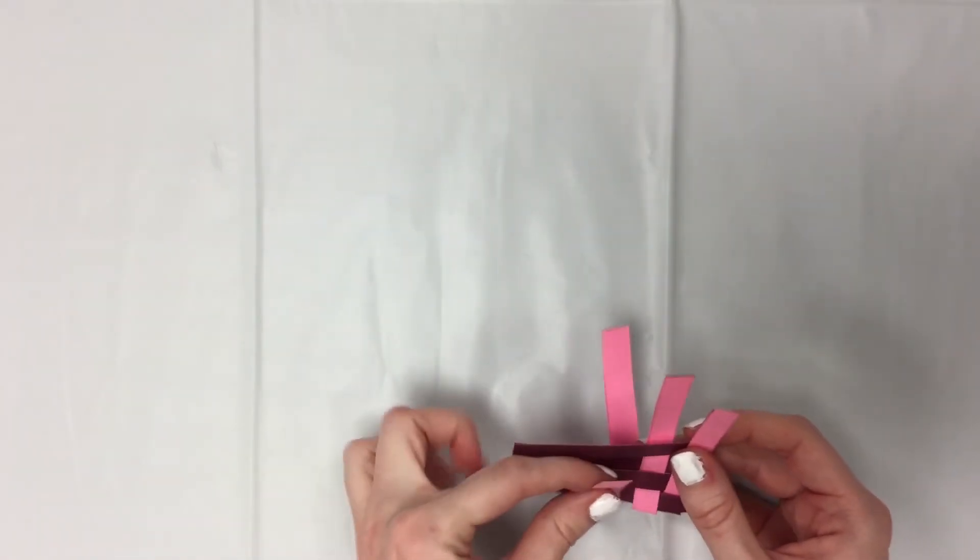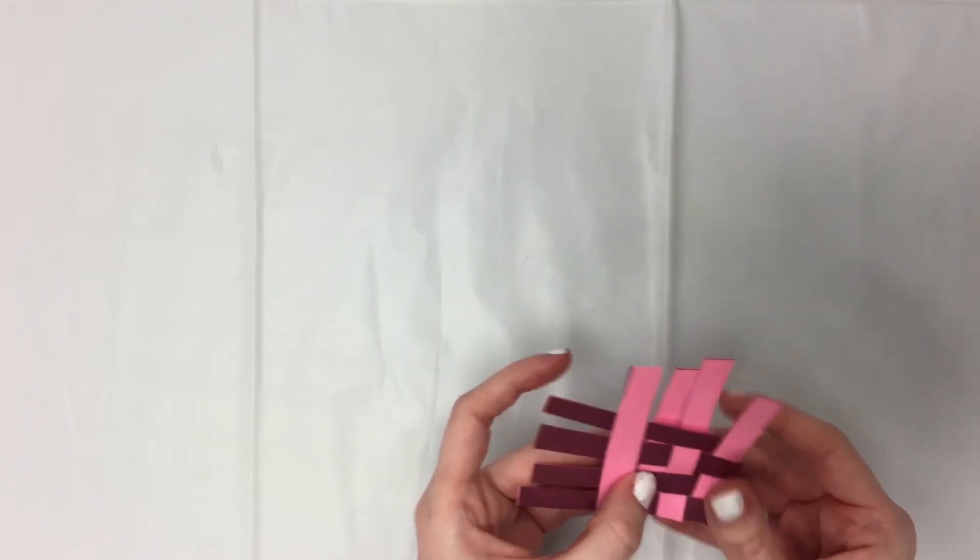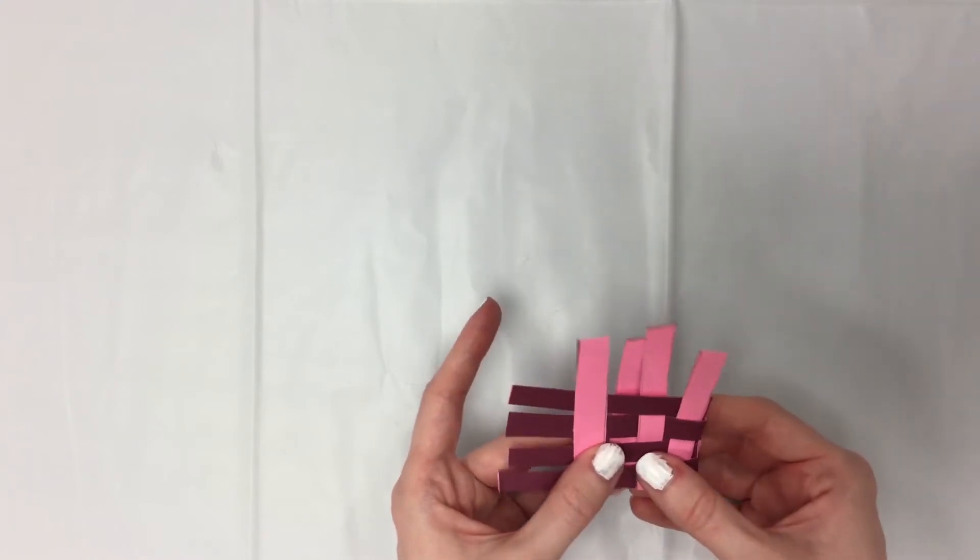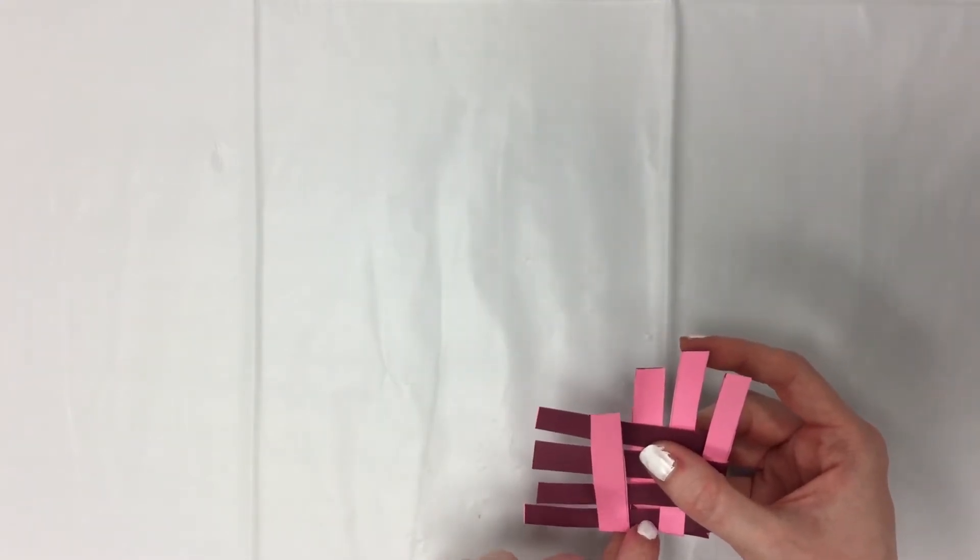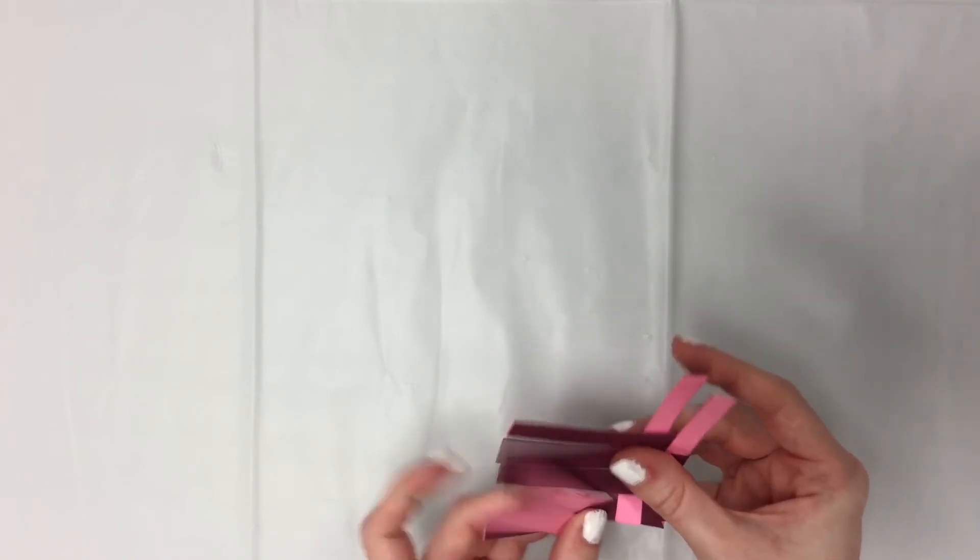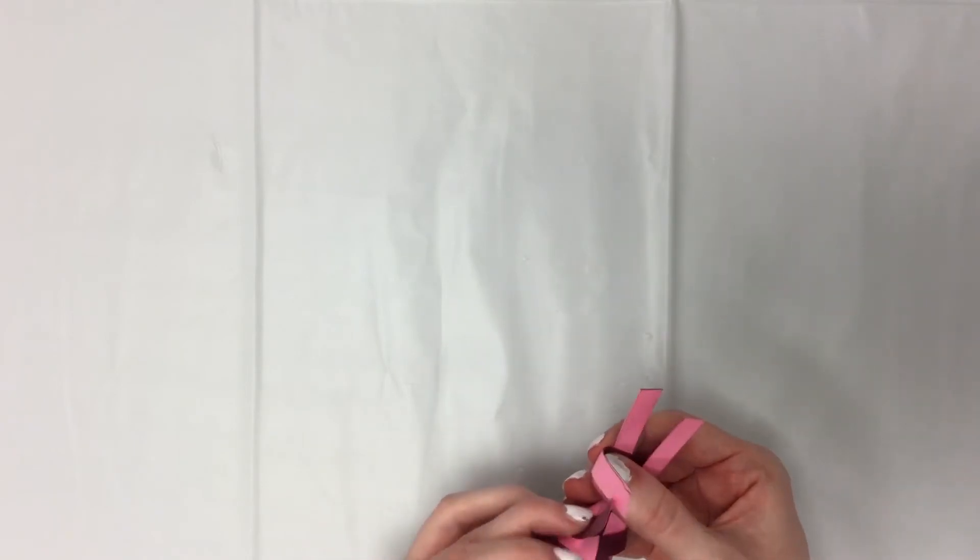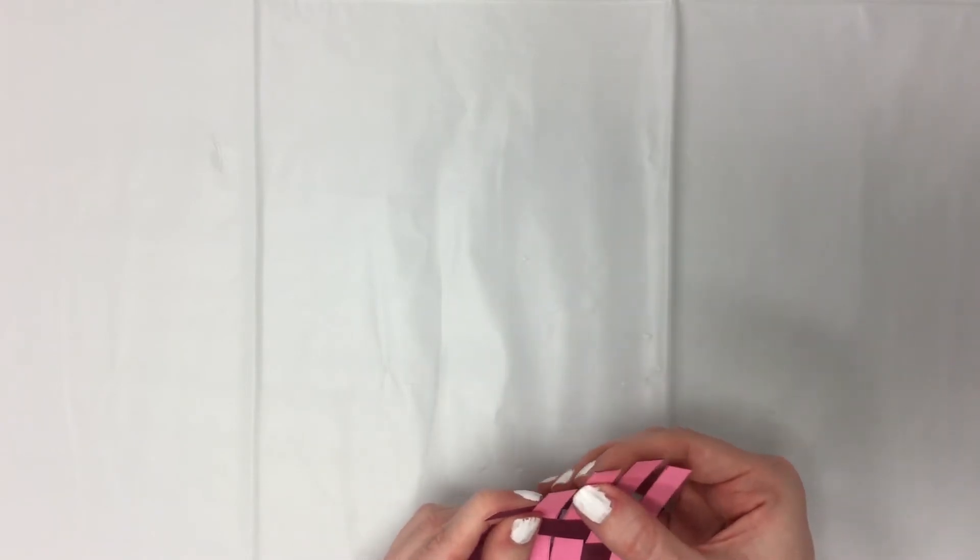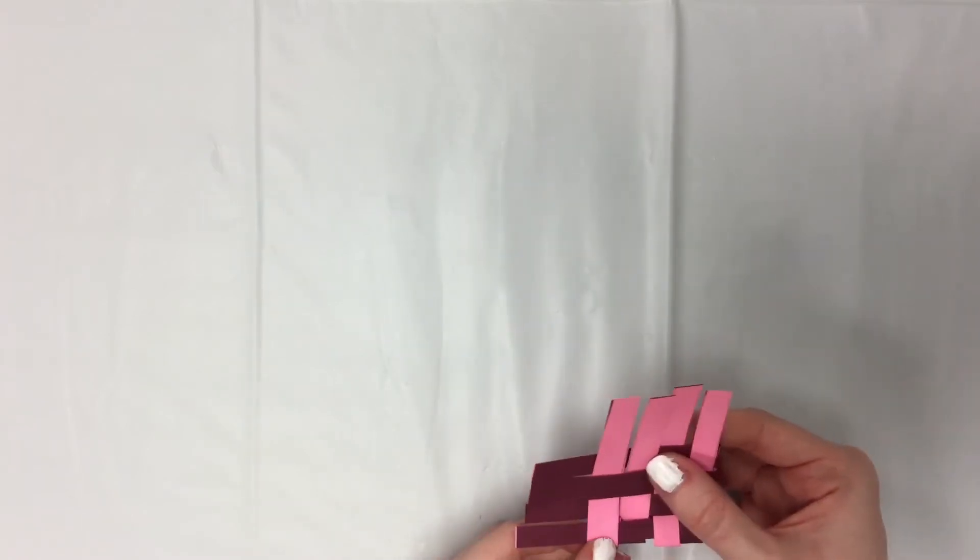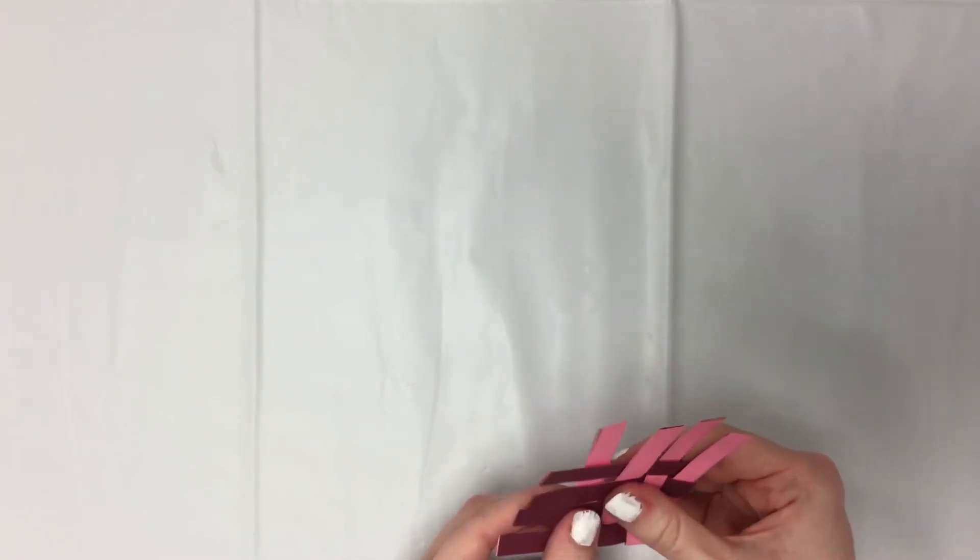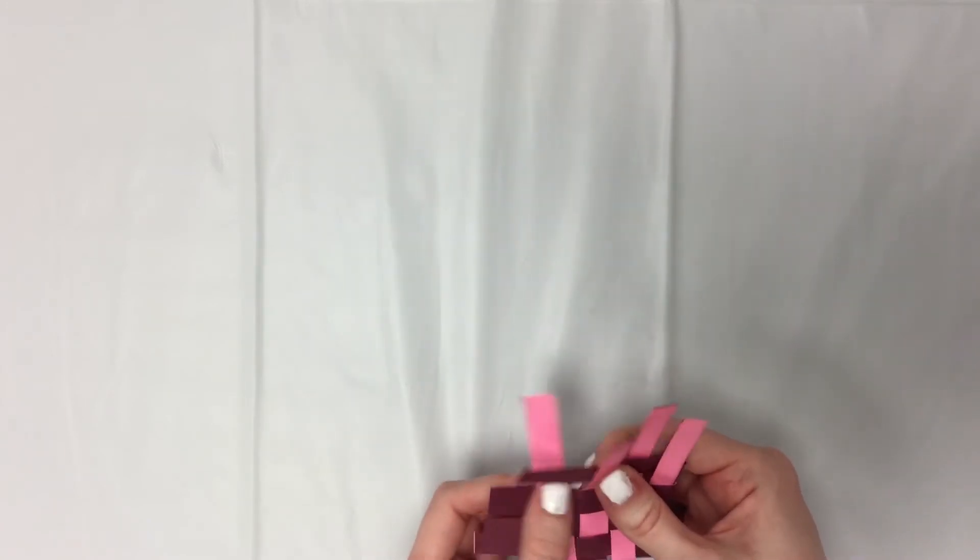So we'll start with this strip, our third one. The bottom we have, it goes under, under, over, under, over. And then our last one starts over, make it go under, over, under.